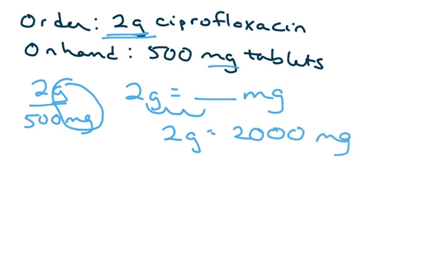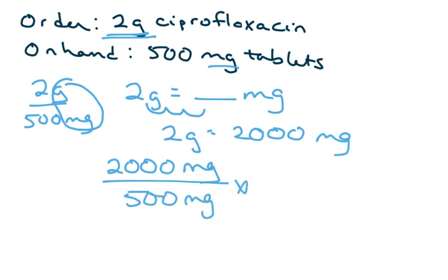So, then you're going to set it up. So, what's ordered now is 2,000 milligrams. And, what you have on hand is 500 milligrams. And, again, it's for tablets. So, it's per one tablet. And, so, these units cancel. 2,000 divided by 400 should be four tablets.